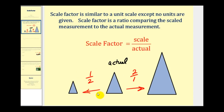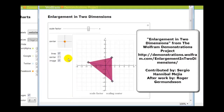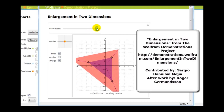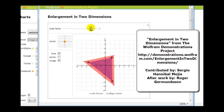Let's take a look at an animation of scale factor. When the scale factor is larger than one, the scaled triangle is larger than the actual triangle. If the scale factor is less than one, the scaled triangle would be smaller than the original triangle. Notice that the triangles do stay proportional to one another when working with scale factor.